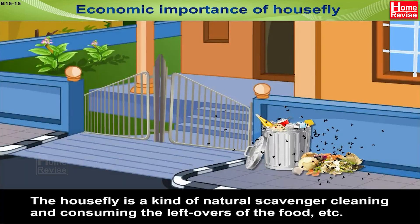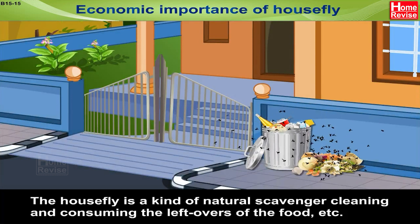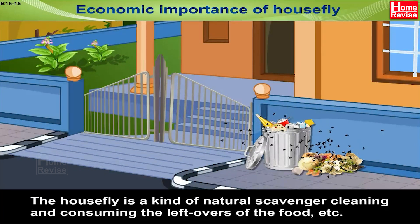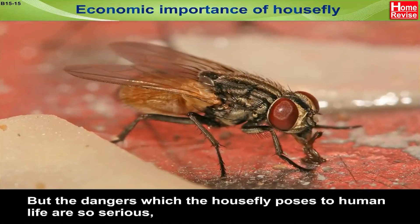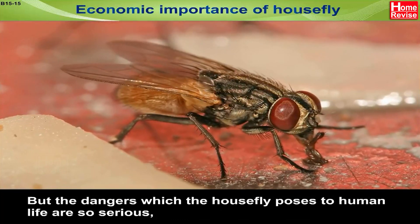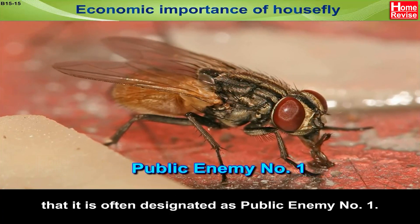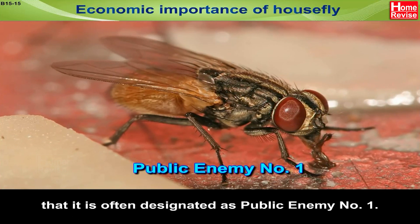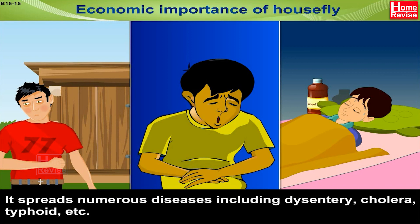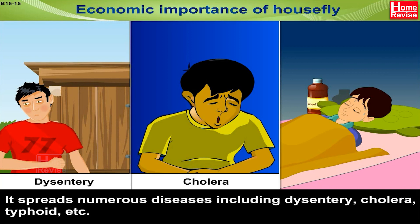Economic importance of house fly: the house fly is a kind of natural scavenger, cleaning and consuming the leftovers of food. But the dangers which the house fly poses to human life are so serious that it is often designated as public enemy number one. It spreads numerous diseases including dysentery, cholera, typhoid, etc.